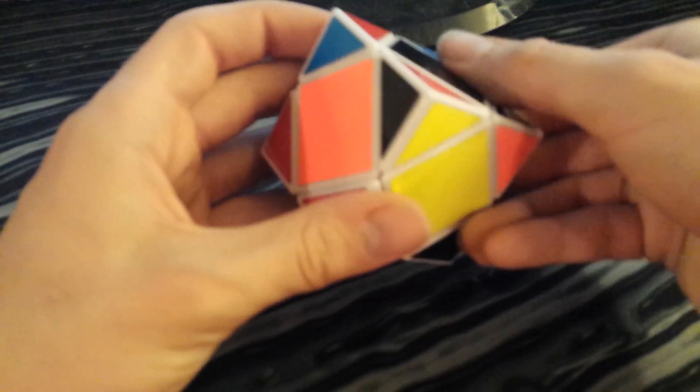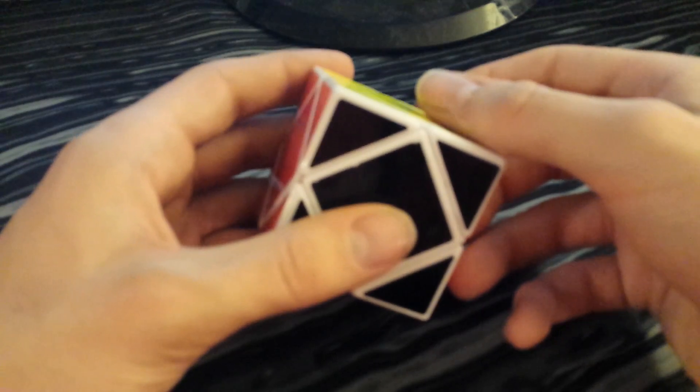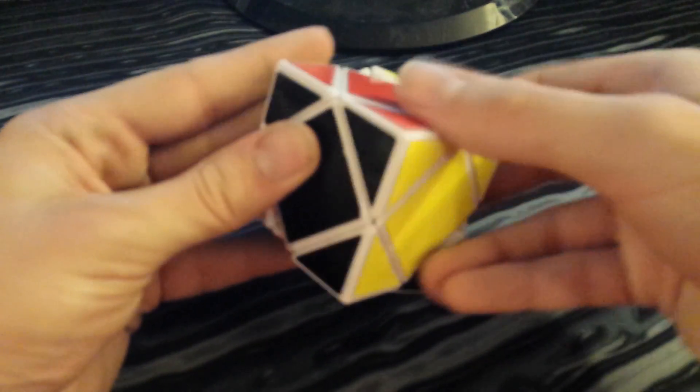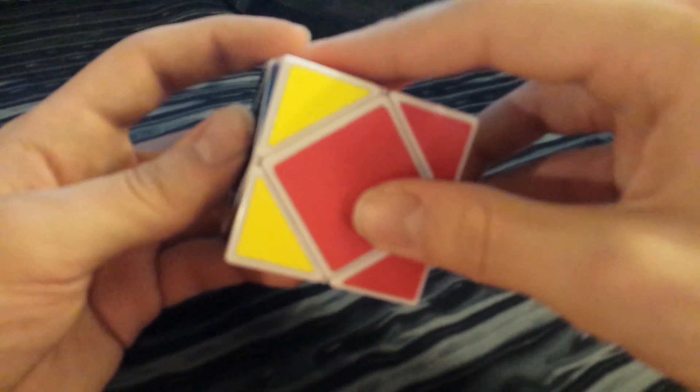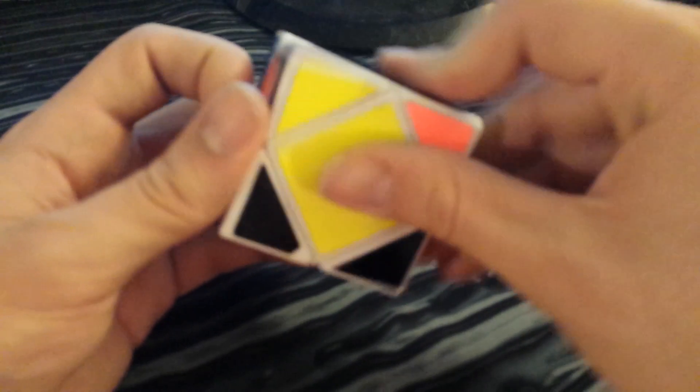Let's do it one more time, a little bit faster. Two thumbs here, push down. Down. Two thumbs here to push up, and then re-grip and turn it up.